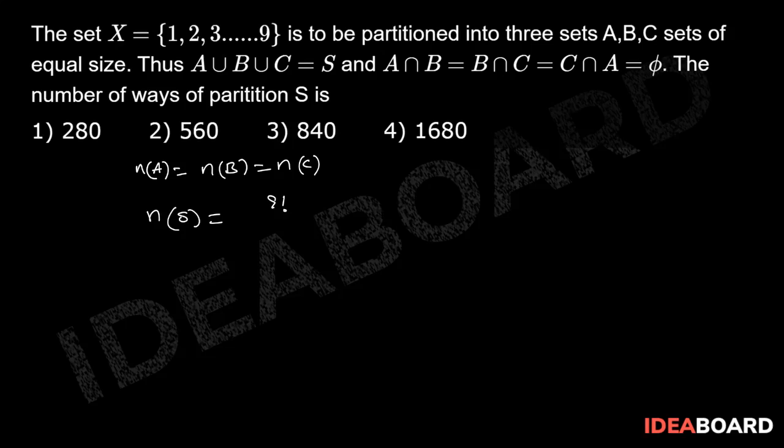That is equal to 9 × 8 × 7 × 6 × 5 × 4 × 3 × 2 × 1 divided by 6 × 6 × 6. The 6's cancel out, giving us the final result of 1680.